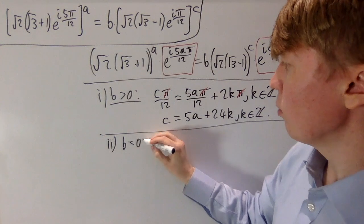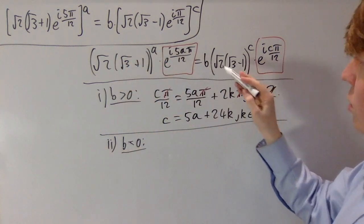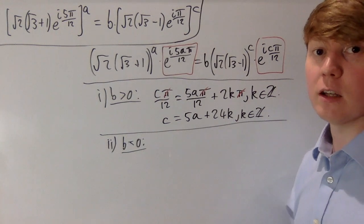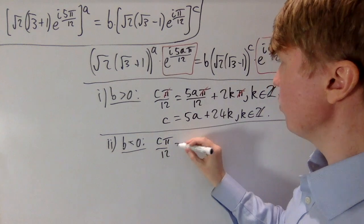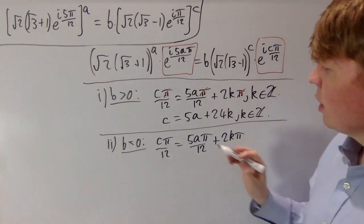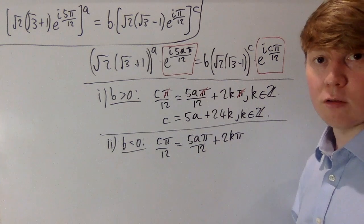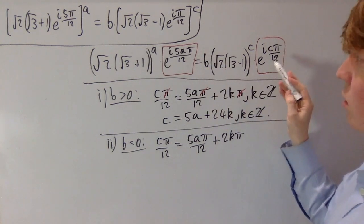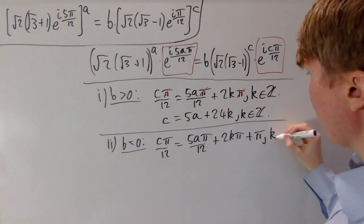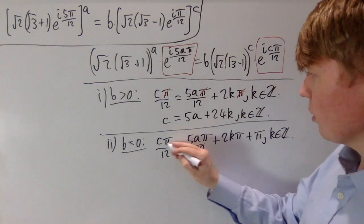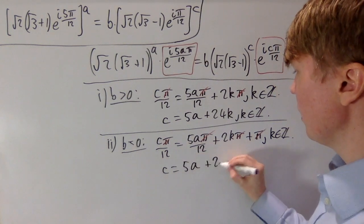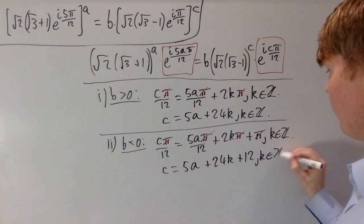When b is negative, the two complex numbers in the equation are negatives of each other, so multiplying by −1 adds π to the argument. This gives cπ/12 = 5aπ/12 + 2kπ + π. Multiplying by 12 yields c = 5a + 24k + 12, where k is any integer.